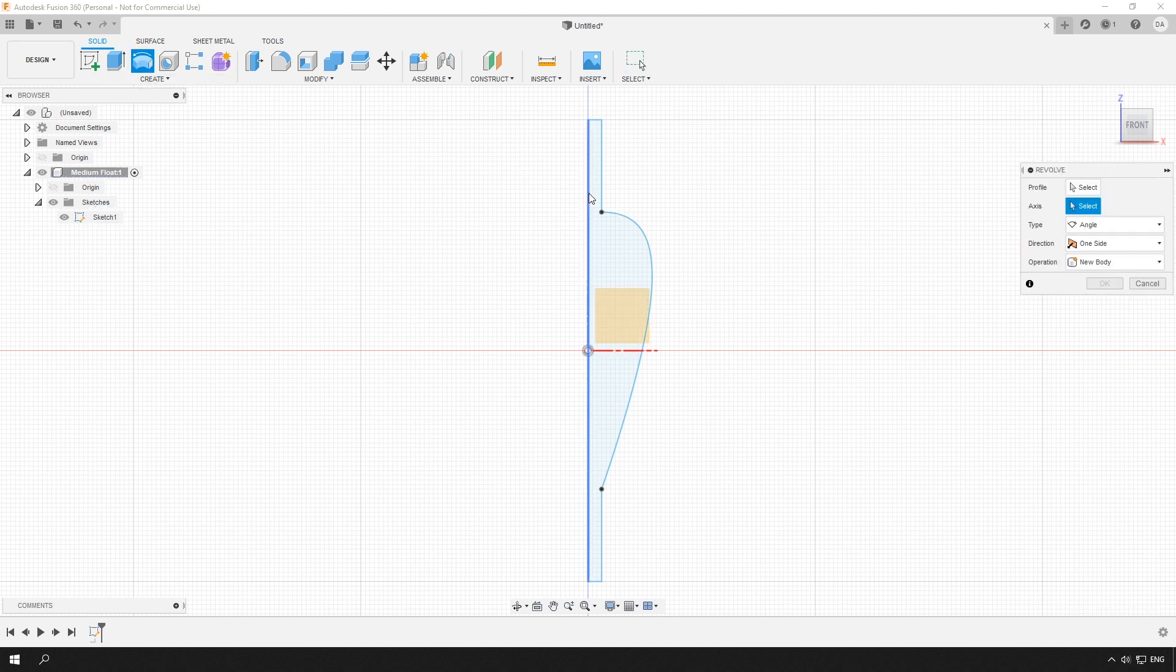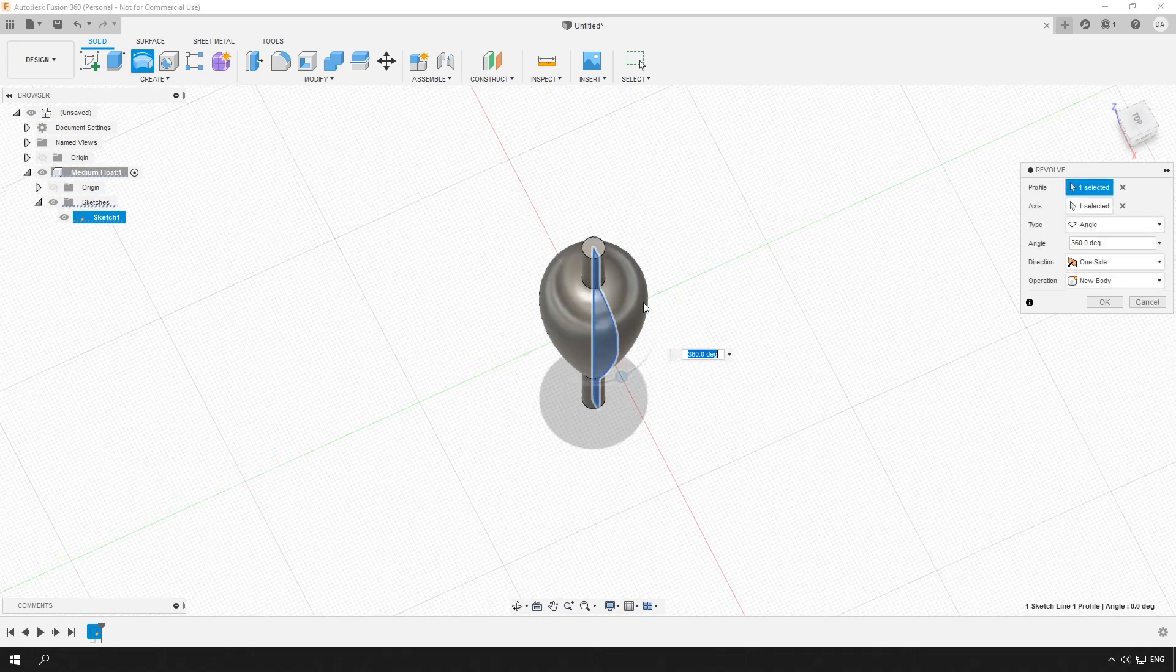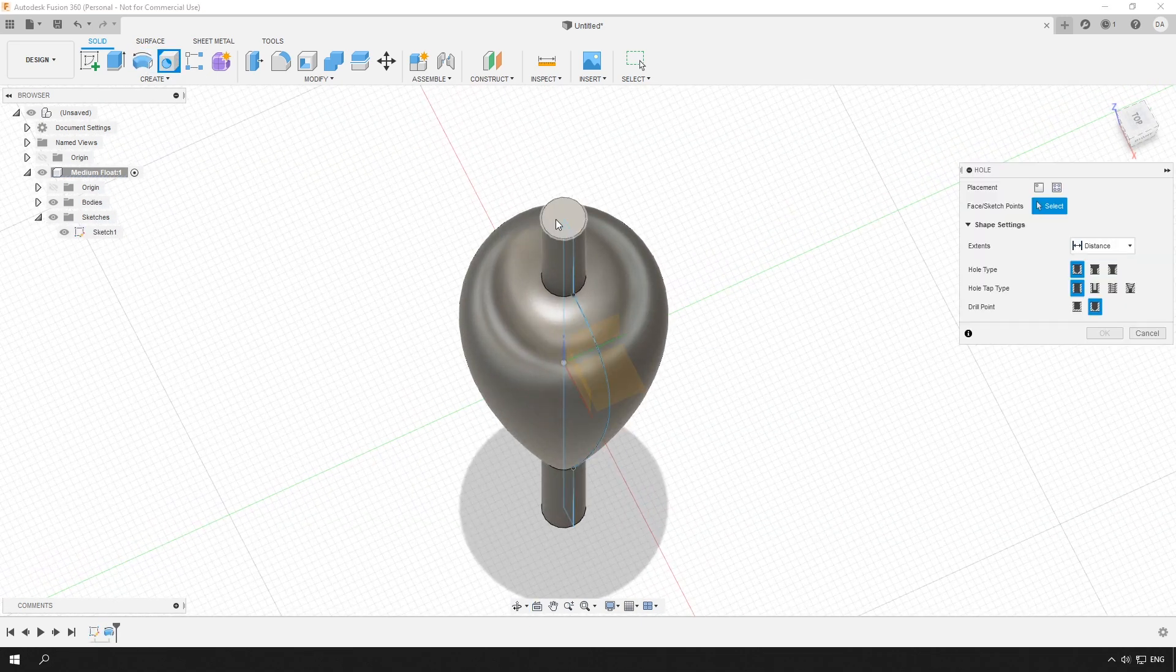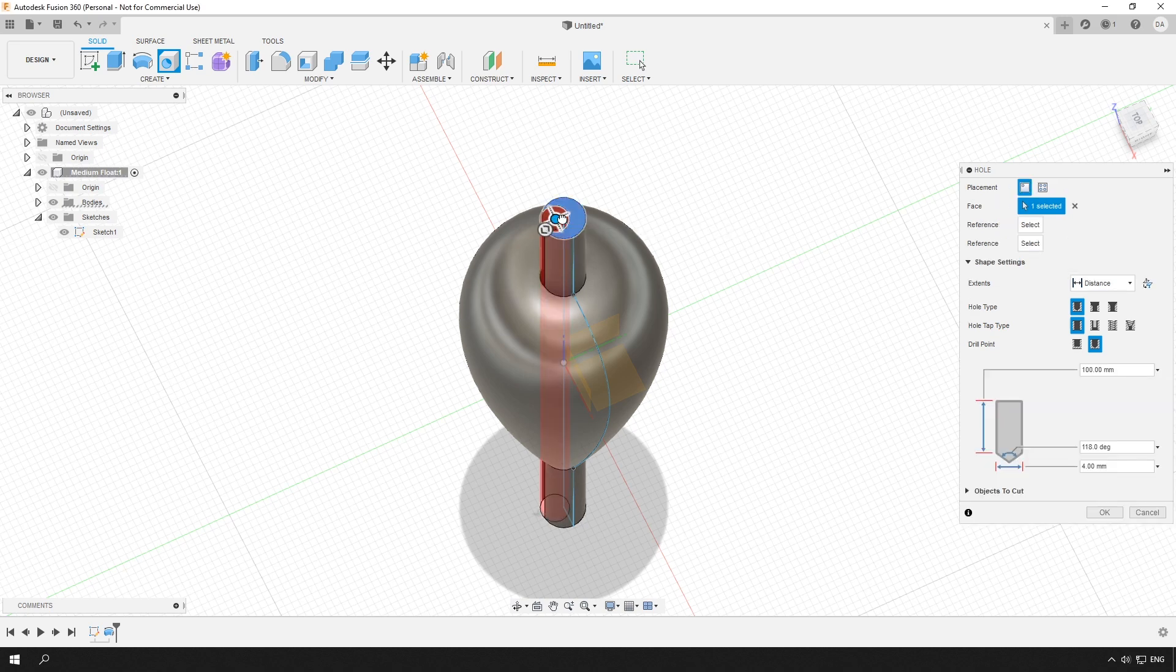I am making a slip bobber, also called a running float. That is why I am making the hole through the center. I will explain what is a running float later.